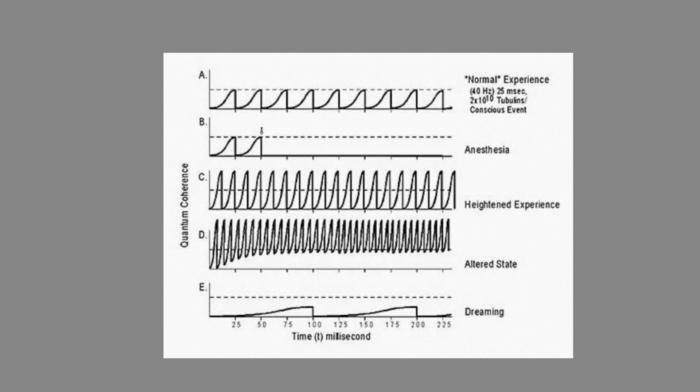Graph C depicts a state of heightened awareness in which increased sensory input causes more tubulin molecules to enter superposition. According to the Penrose equation, the increased energy and mass associated with these states cause more frequent quantum collapses, corresponding to the higher EEG frequencies observed in such high conscious states.